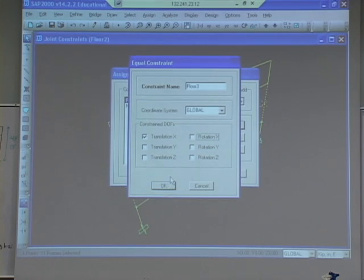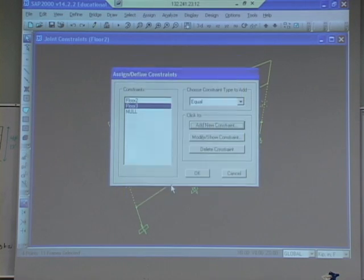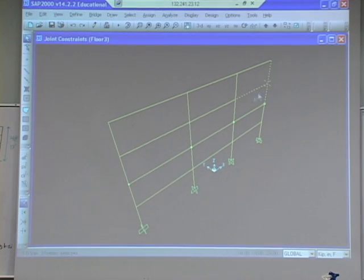If we selected rotation constraints then that would also make the nodes have to rotate at the same angle, and that's not what the slab is doing. It's only restraining the displacement. So we'll keep going.